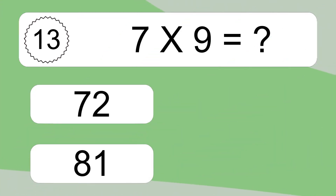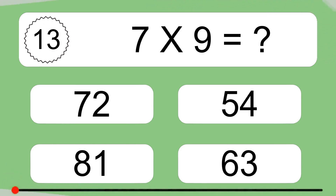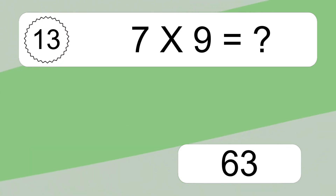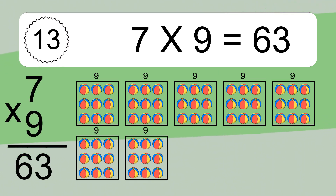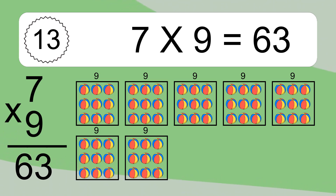7 times 9 equals what? We have 7 boxes, and each box has 9 colorful balls inside. If you count all the balls in all the boxes together, you will have 7 times 9 balls. This equals 63 balls.